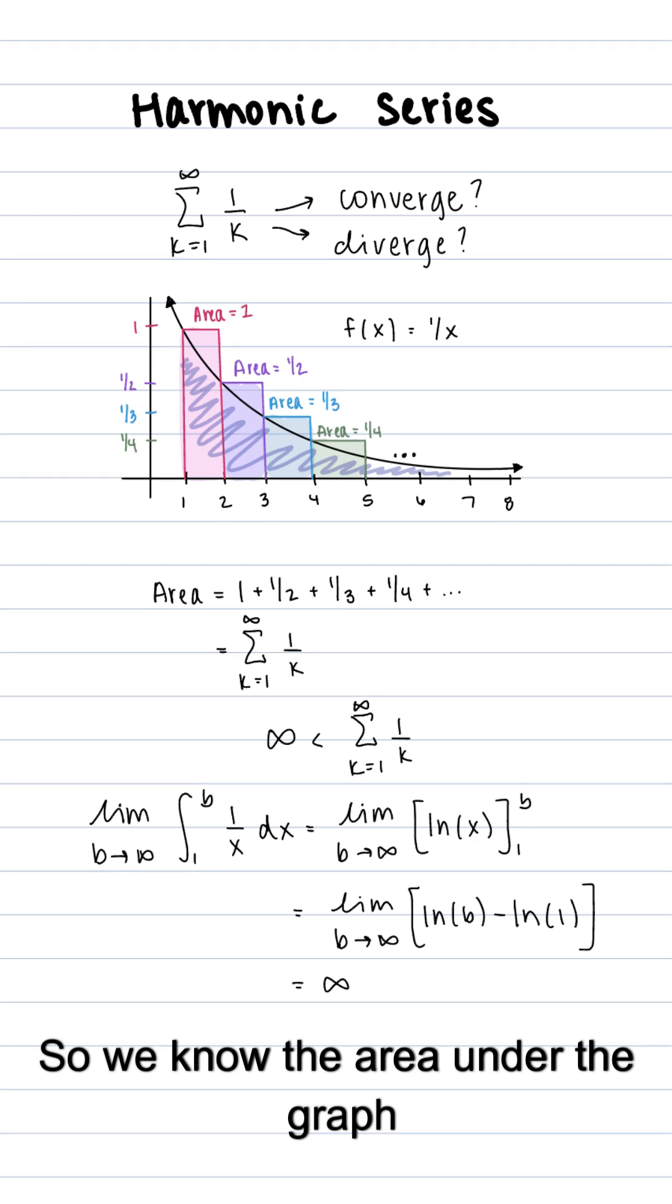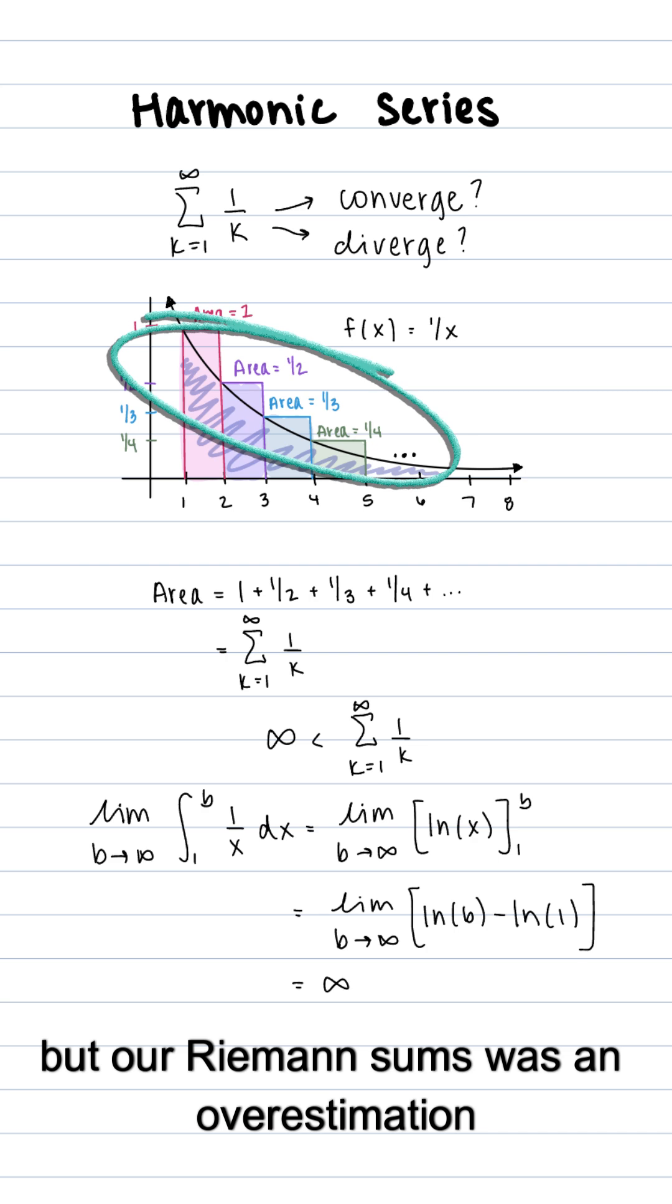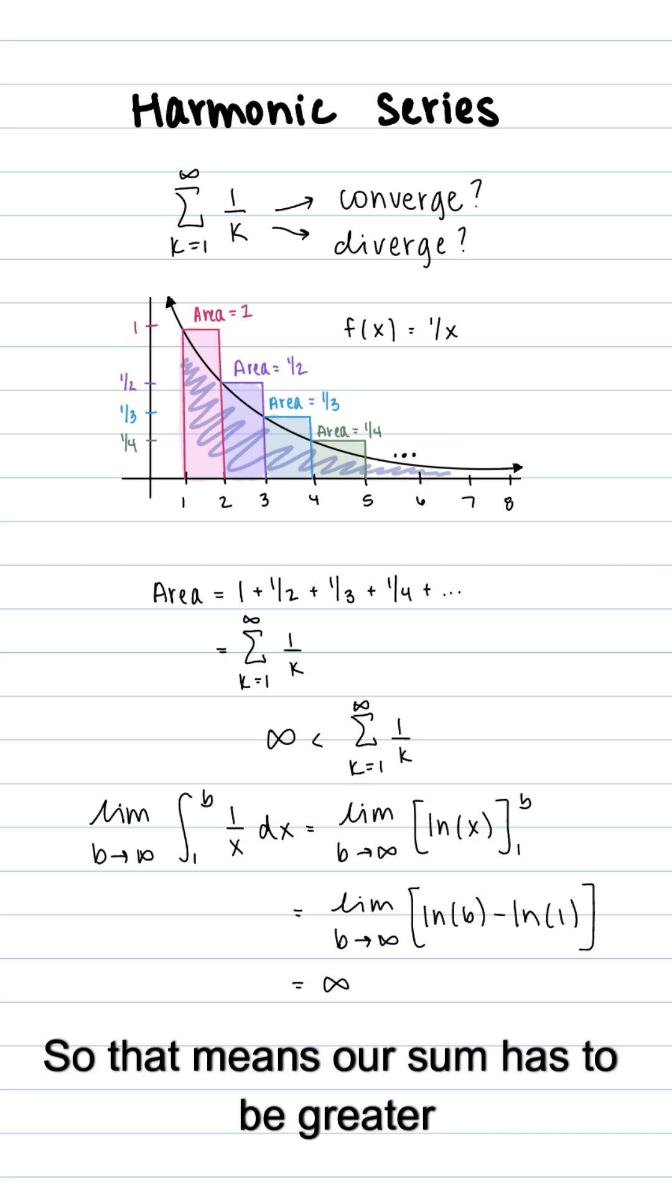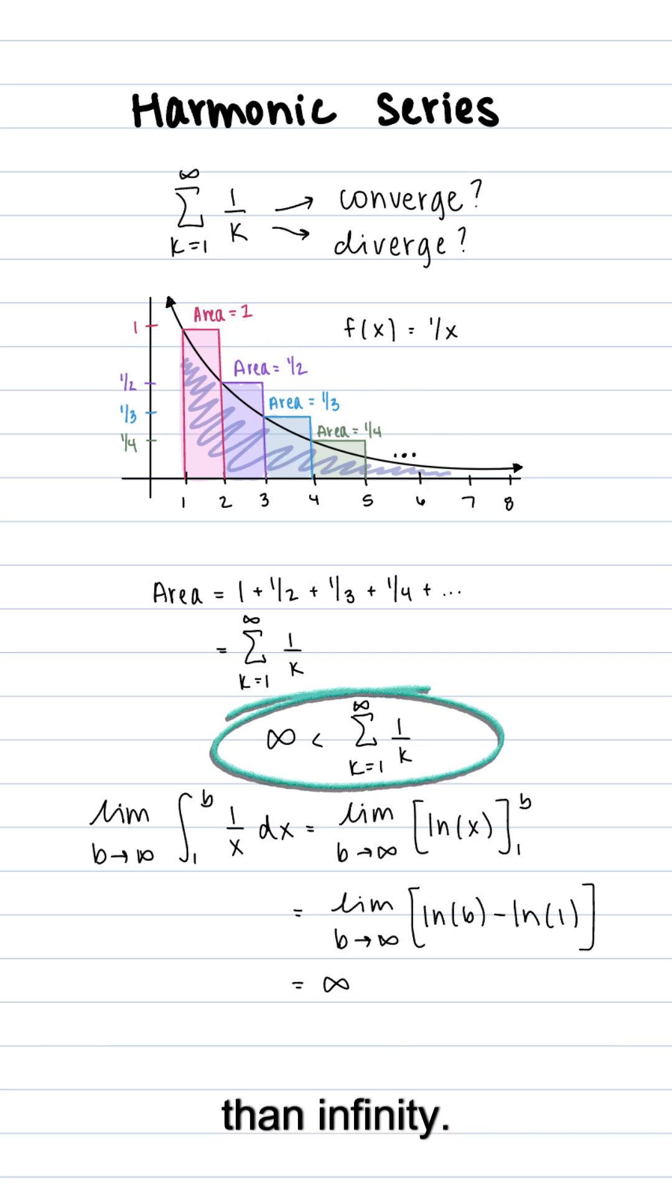So we know the area under the graph diverges to infinity, but our Riemann sums was an overestimation of the area. So that means our sum has to be greater than infinity. This tells us that our sum also diverges to infinity.